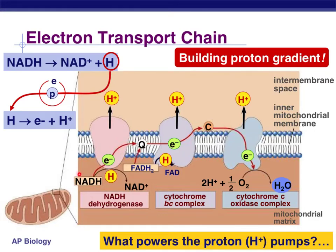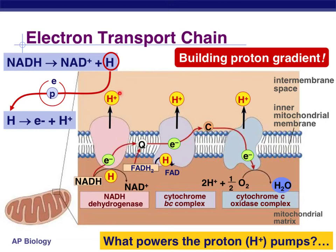So NADH comes in and docks at this first protein. The hydrogen gets removed, the electron gets taken off of the hydrogen, and the electron gets passed to the next protein, then the next, then the next. While that's happening, the hydrogen that's just been stripped of its electron — which is now an H+ ion — is going to get pumped upwards through that protein. The same thing happens to FADH2: it's going to dock on its protein, its hydrogen is going to get removed, it's going to pass its electron, and the hydrogen is going to get pumped up. So the movement of these electrons gives these proteins the energy needed to pump hydrogen ions from the matrix into the intermembrane space.